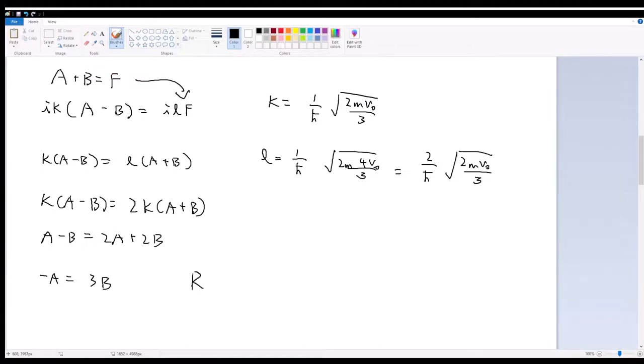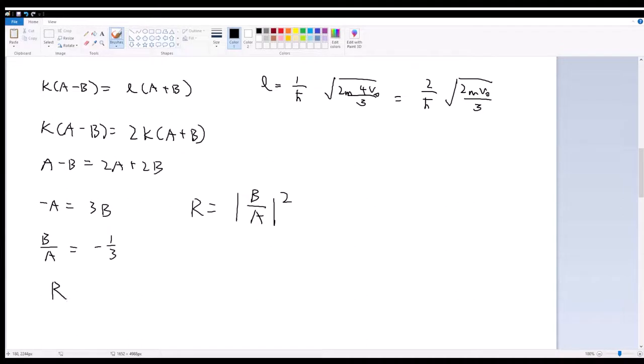So if we want the reflection coefficient, then that's equal to the magnitude squared of B over A squared. So B over A is going to equal negative one-third. If I move that over, yeah. And then, so the reflection coefficient is just equal to 1 over 9. And just like that, we have solved part A.